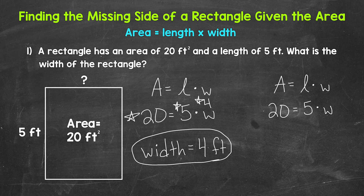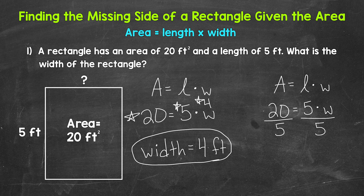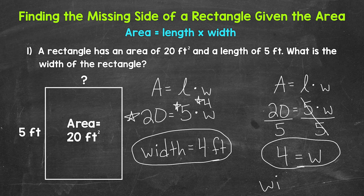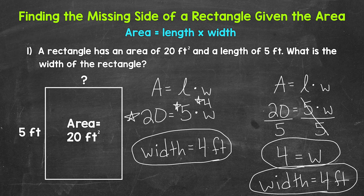We have five times W, so we need to get rid of that five. We need the inverse operation — the opposite operation. The inverse of multiplication is division, so we divide the right side of the equation by five. Whatever we do to one side of an equation, we must do to the other, so divide the left side by five as well. On the right side, the fives cancel each other out — W is now isolated. On the left we have 20 divided by five, which gives us four. So W equals four; the width is four feet.